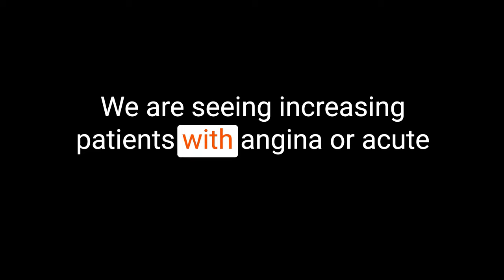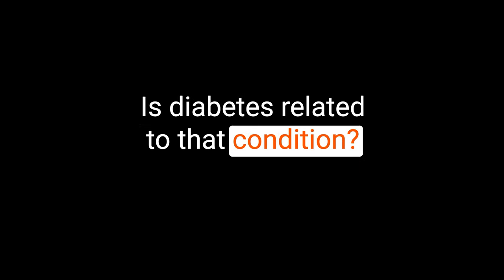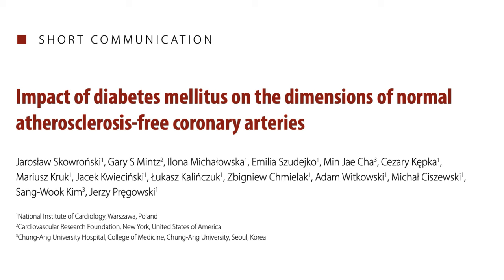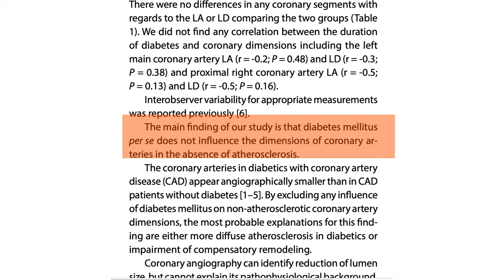We are seeing increasing patients with angina or acute coronary syndrome with no obstructive coronary disease. Is diabetes related to that condition? Yes. Having diabetes can increase the risk of microvascular disease due to factors like high blood sugar, insulin resistance, inflammation, reduced nitric oxide production, endothelial dysfunction, and increased sympathetic activity. When it comes to patients with INOCA, having type 2 diabetes can worsen the prognosis. It's important to note that in the absence of atherosclerosis, diabetes does not affect the size of the coronary arteries — diabetic vessels have the same diameter as non-diabetic vessels, though they may seem smaller due to diffuse disease. The treatment approach for INOCA is the same for both diabetes and non-diabetes.